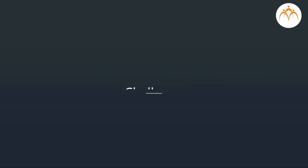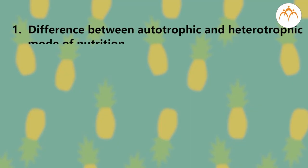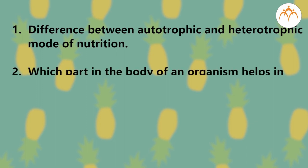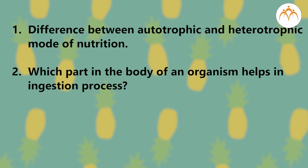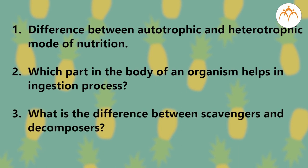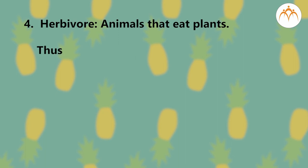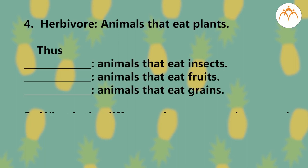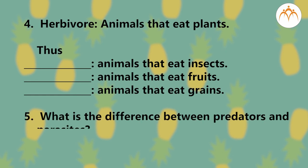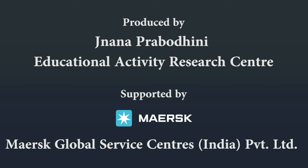Can you answer the following questions? What is the difference between autotrophic and heterotrophic mode of nutrition? Which part in the body of an organism helps in the ingestion process? What is the difference between scavengers and decomposers? Fill in the blanks: herbivores are animals that eat plants; dash — animals that eat insects; dash — animals that eat fruits; dash — animals that eat grains. What is the difference between predators and parasites? In case you have difficulties answering any of these questions, I suggest that you go through the session on nutrition in living organisms again and also read the chapter in your textbook thoroughly.